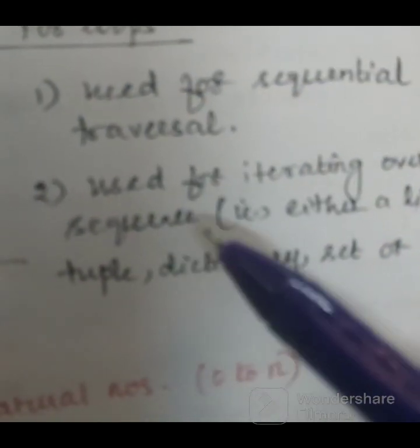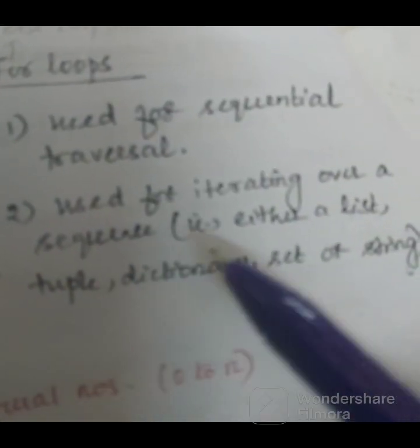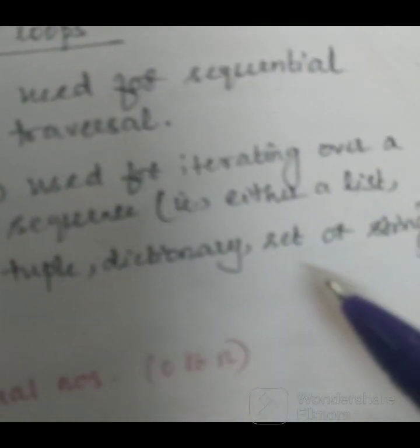Sequence is one data type. Already in previous video, sequence that is either a list, tuple, directory, set or string.